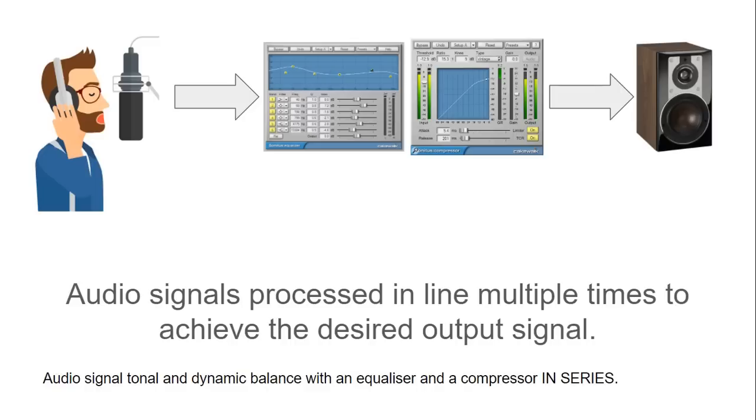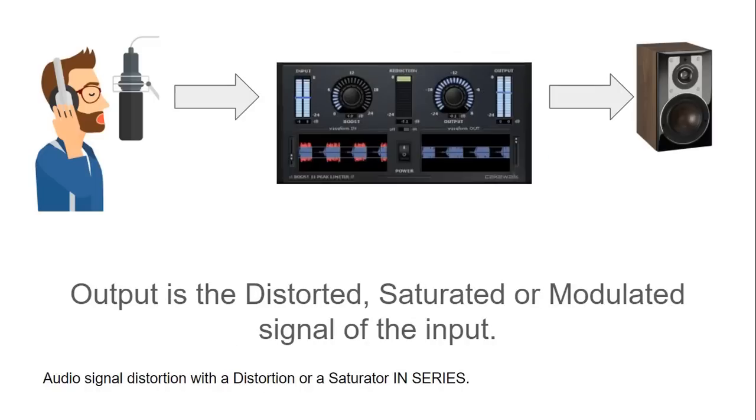We could have a compressor followed by an equalizer. We could also have other effects such as distortion, saturation, modulation, chorus, flanger, and so on that go in series with the signal, thus changing the incoming audio signal to the desired output.